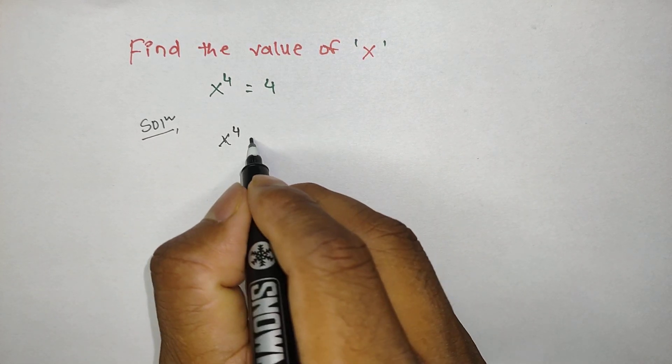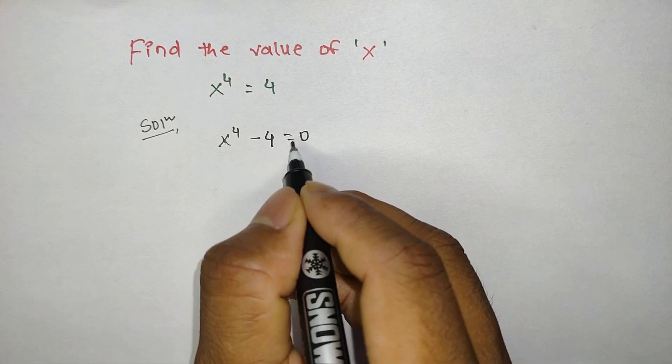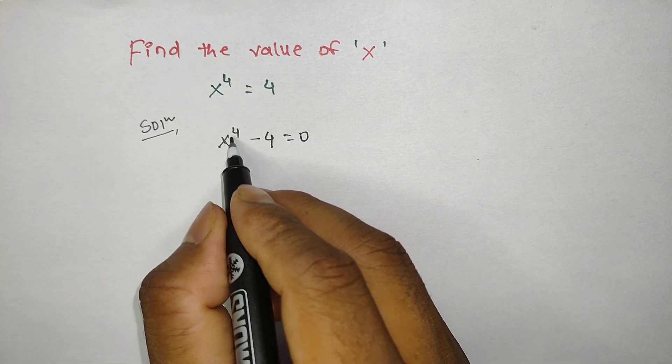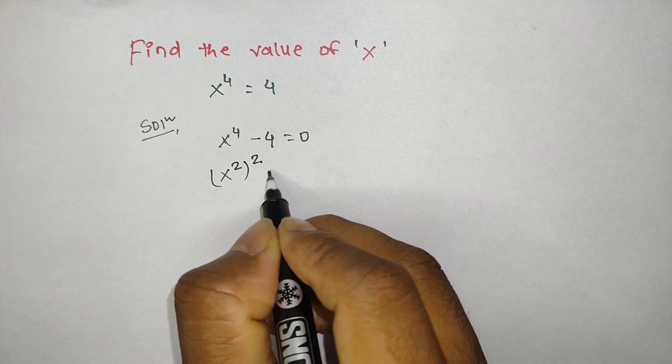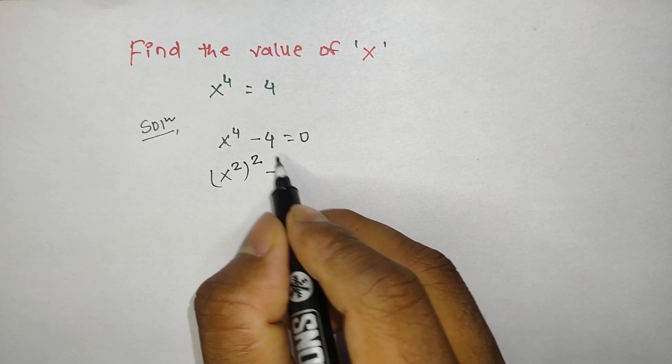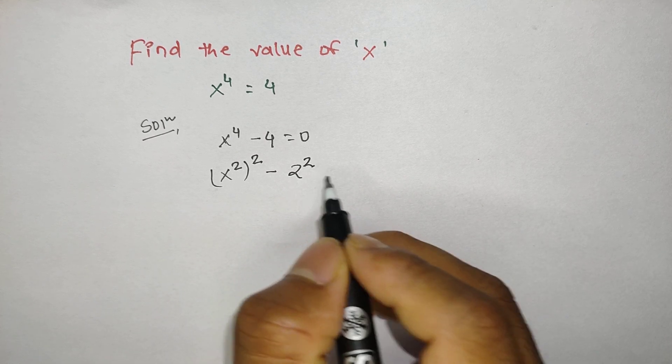Here x power 4, we can write this as x power 2 to the whole power 2. And similarly, 4 is a square number, so we can write this as 2 power 2.